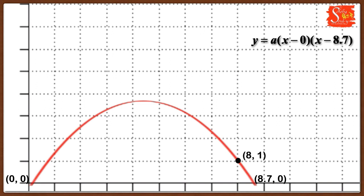So when you put x = 8 and y = 1, we can find the value of a. When these are substituted in the equation, that gives you the value of a, which is a = 1/(8 × -0.7).